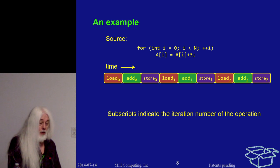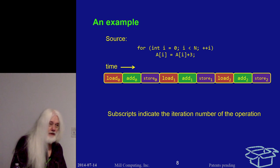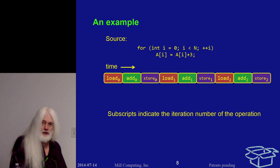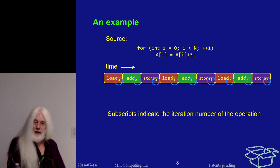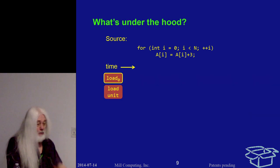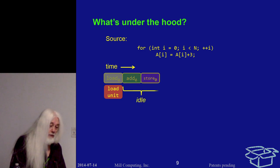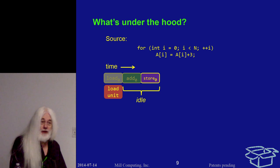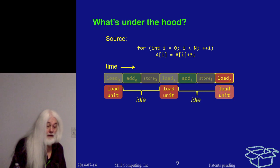The subscripts on each operation indicate the iteration number — the value of i. You'll see different operations executing in the same cycle with different subscripts, corresponding to the value of i or number of iterations since we started. Now, what's under the hood? There's actually a load unit — a functional unit in the hardware. When we do the load operation, the load unit fires and does its thing, then waits because there isn't anything else for it to do, and so forth.